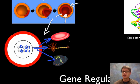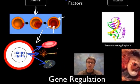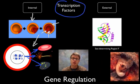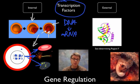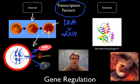Those internal cues are called transcription factors. Transcription is the process where we go from DNA to RNA, and so a transcription factor is a protein or chemical that causes DNA to make a transcript — in other words, to make messenger RNA. Transcription factors are chemicals in the cell that essentially say 'turn that gene on.' They can come internally from within the cell, but they can also come externally.